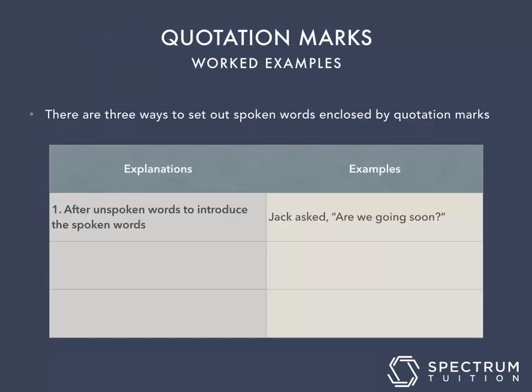There are three ways to set out spoken words enclosed by quotation marks. The first way is after unspoken words to introduce the spoken words. For example: Jack asked, comma, 'Are we going soon?' You can clearly see here that the actual spoken words are the only words enclosed inside the quotation marks.